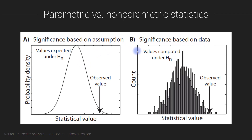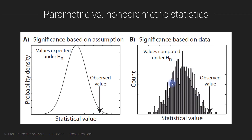We have two ways of generating this null distribution. We can generate it based on a mathematical formula — an analytic solution — where we rely on several assumptions about the underlying population. This is called parametric because we compute parameters based on analytic formulas. Alternatively, we can generate it based on null hypothesis empirical distributions, generally from permutation-based approaches.